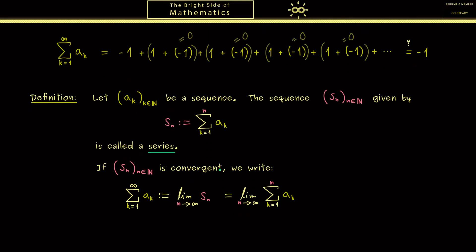There aₖ is minus 1 to the power k. Now let's write this sum here as a sequence with index n. There for calculating the first member we put in the index n is equal to 1 and get out minus 1. Then for the next member we have n is equal to 2 which means we have minus 1 plus 1 and we get 0.